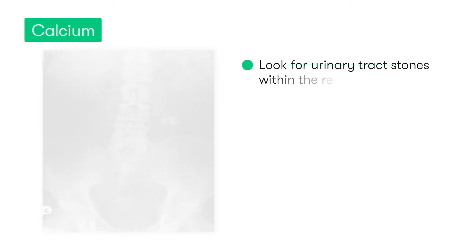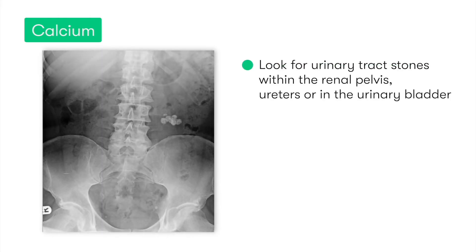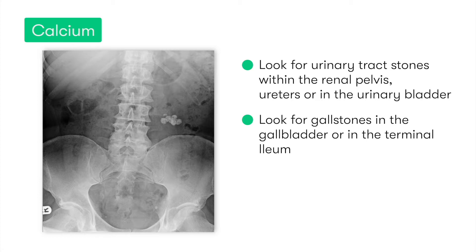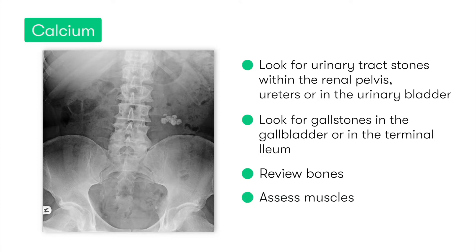Moving on to C for calcium: this mainly involves assessing for the presence of any calcified urinary tract stones within the renal pelvis, along the course of the ureters, or within the urinary bladder. We can also look for calcified gallstones present either in the gallbladder, or in the case of gallstone ileus, whether a large stone has become lodged within the terminal ileum.